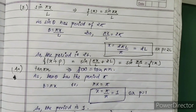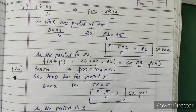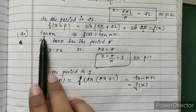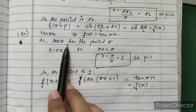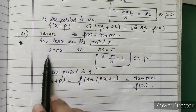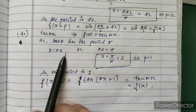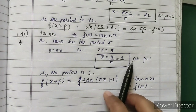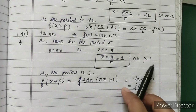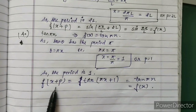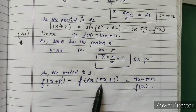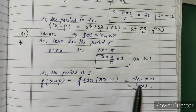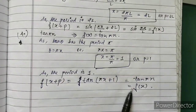The next example is tan(πx). Here f(x) = tan(πx). Since tan(θ) has a period of π, theta equals πx. We equate πx = π, so x equals 1. The period is 1. We conclude: f(x + p) = tan(π(x + 1)) = tan(πx) = f(x).